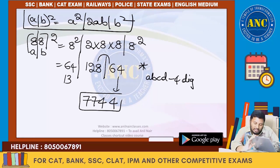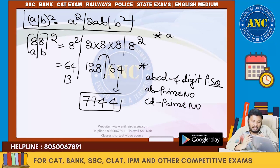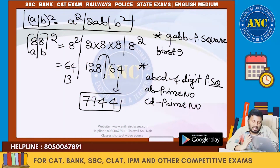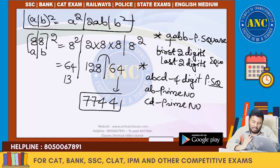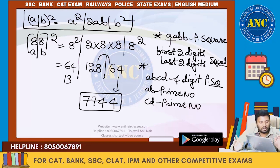Two example problems: First, ABCD is a 4-digit perfect square where AB is a prime number and CD is also a prime number. Second, AABB is a perfect square where the first 2 digits are equal and the last 2 digits are equal. The two examples we solved — 77² = 5929 and 88² = 7744 — will help answer these questions.